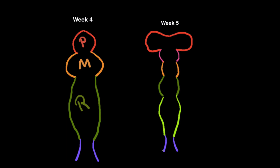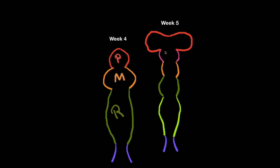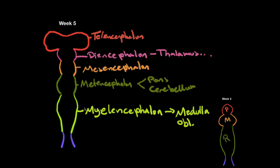In week five, that's how the central nervous system is going to look like. You can see that the rhomboencephalon and prosencephalon are going to divide. The rhomboencephalon is going to be divided into the myelencephalon and metencephalon, which will later develop into the pons, cerebellum, and medulla oblongata. The mesencephalon stays as the midbrain, and the prosencephalon divides into the telencephalon and diencephalon. Our focus in this video is going to be on the medulla oblongata.